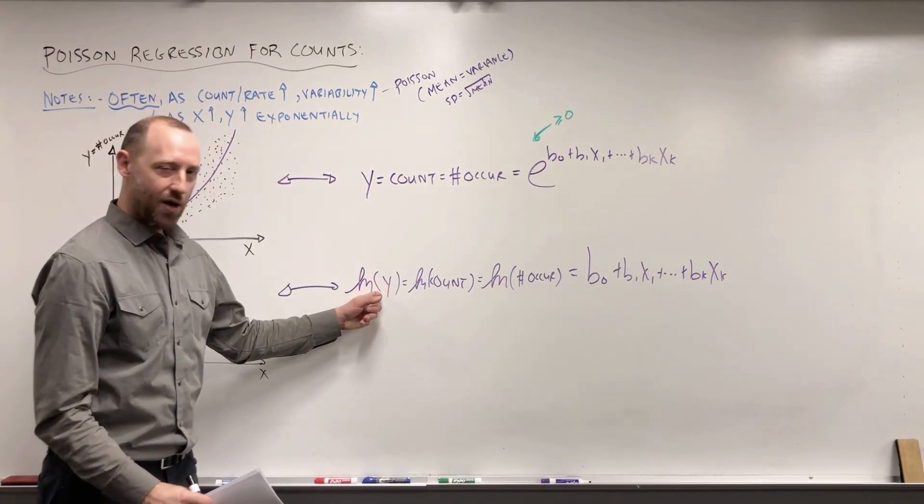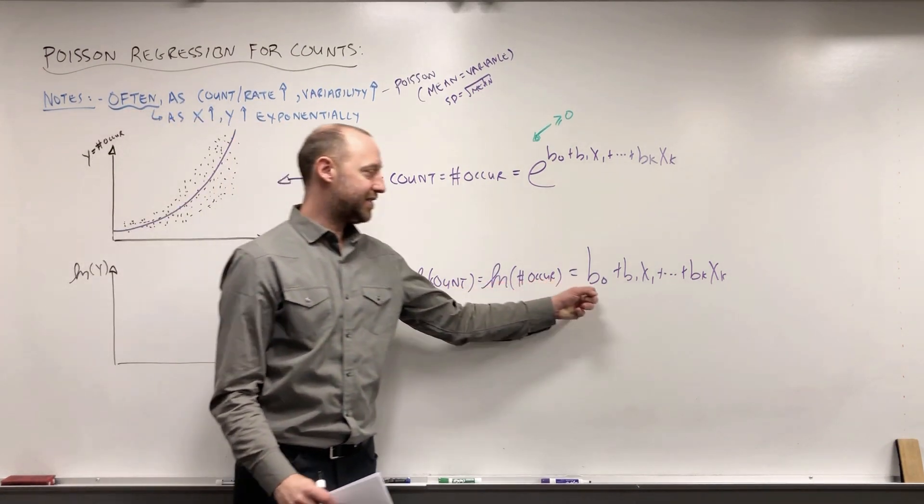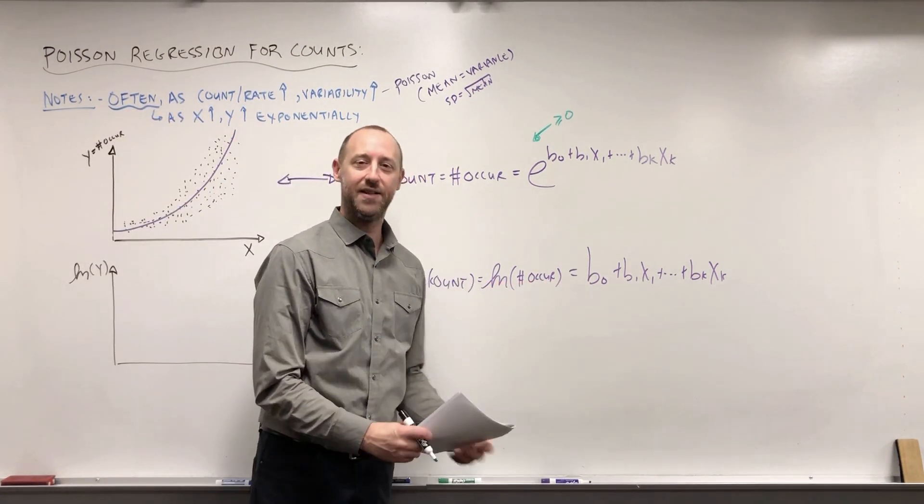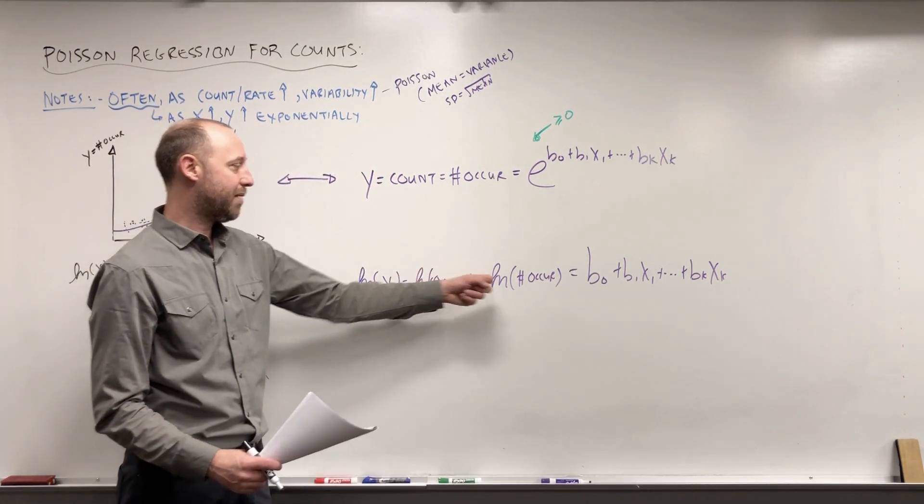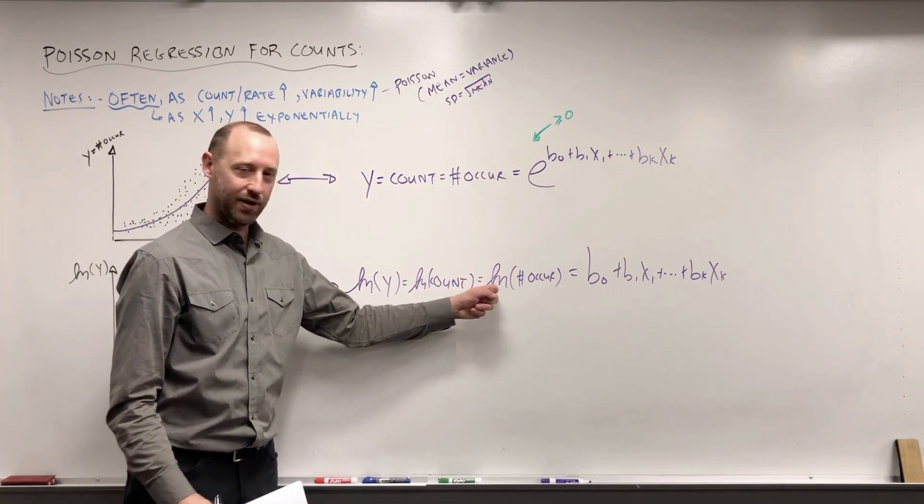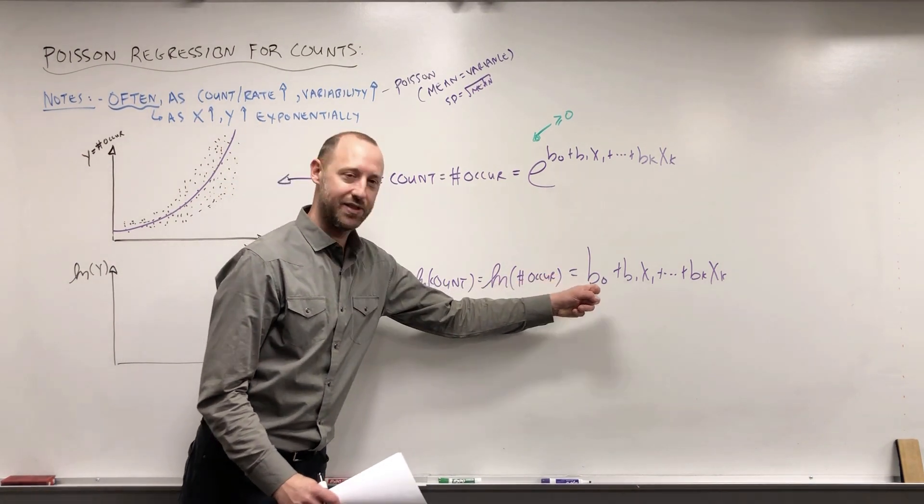So taking the log of the outcome links us to a linear function. Again, this is the generalization or the generalized linear model. Rather than working with the number of occurrences, we use the log number of occurrences that links us to a linear function.